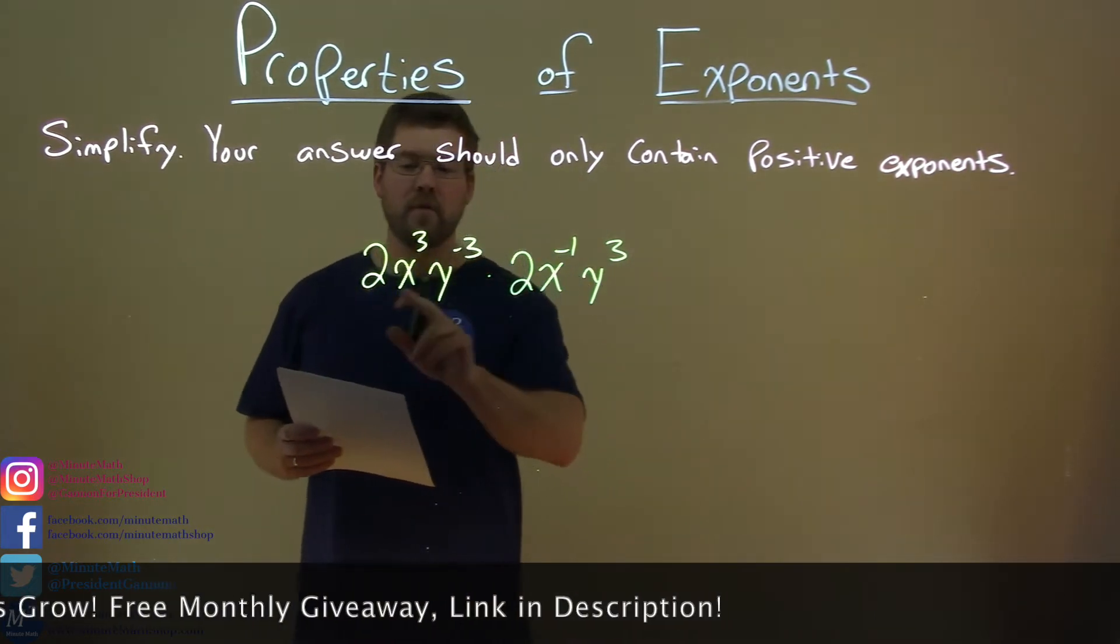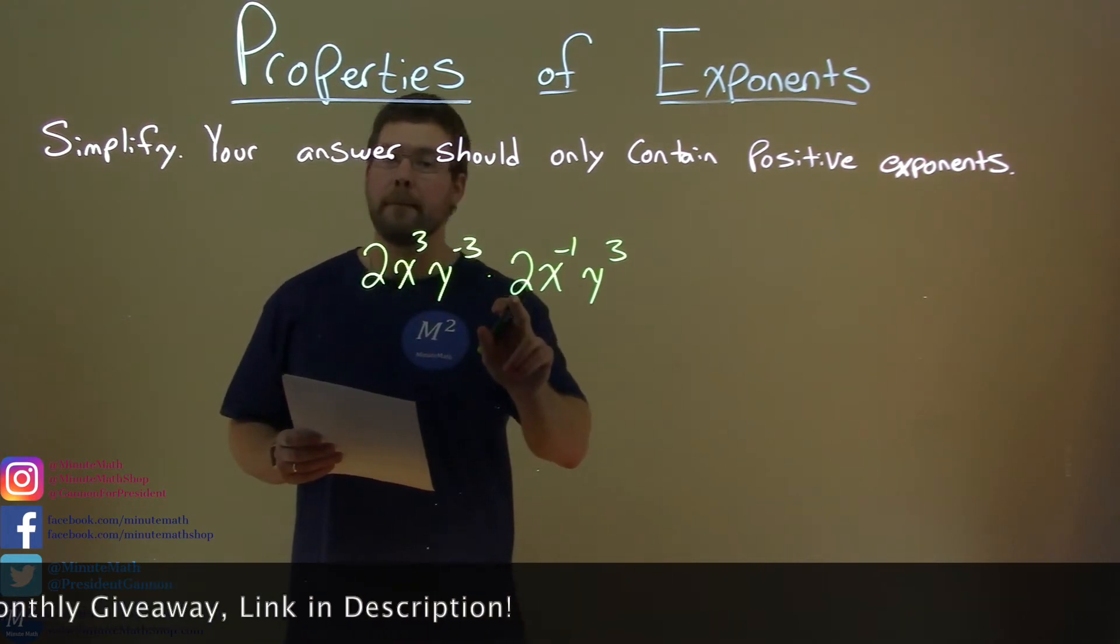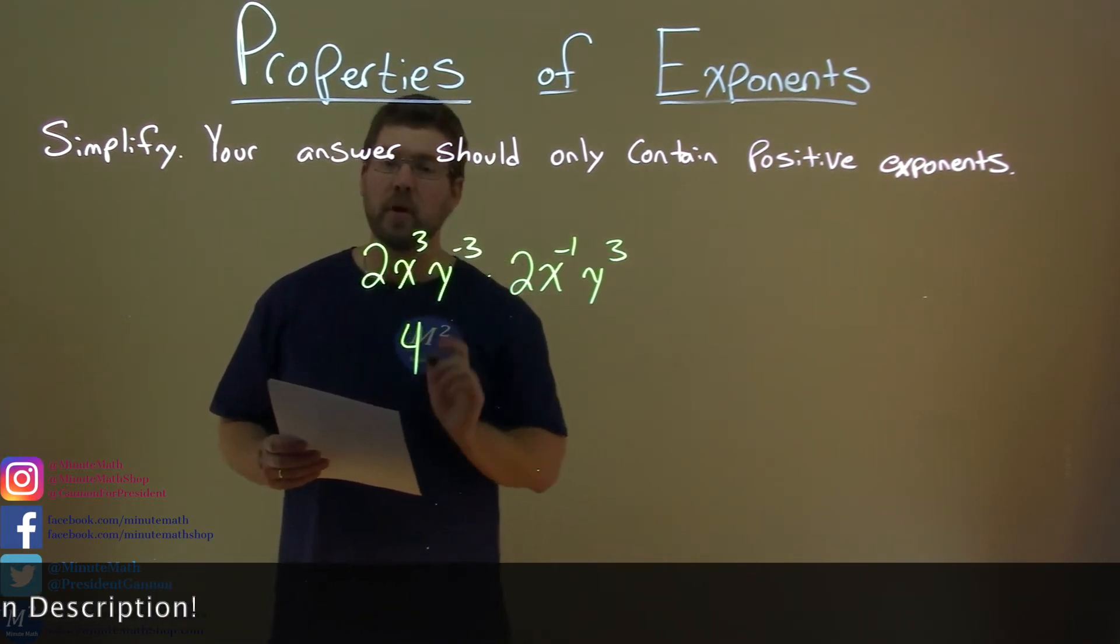First thing I'm looking at are the coefficients here. 2 and 2, multiply them together, we get 4. So, we have 4 right there.